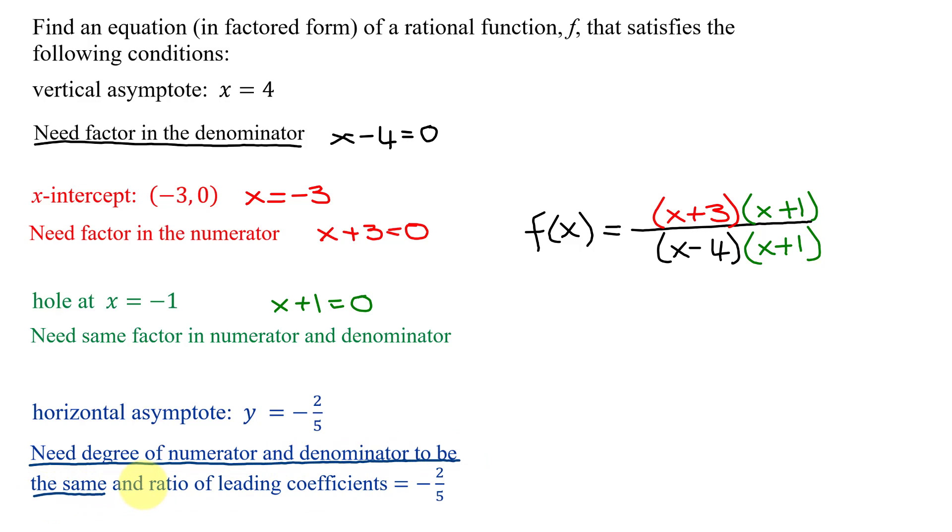Is that true in this case? What's the degree of the numerator? If I foiled out the numerator, the highest exponent on an x would be a 2. So I know the degree of my numerator equals 2. And if I foil out the denominator, the highest exponent on an x is also a 2. So I know the degrees of the numerator and the denominator are both 2.